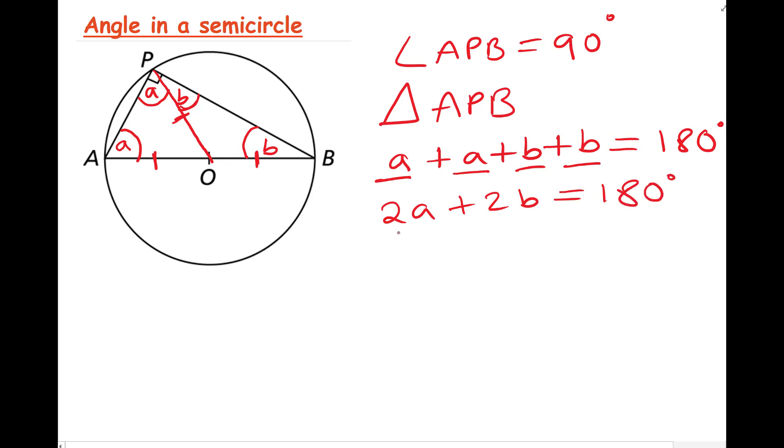Now what we can do is divide both sides by 2, or we can factorize the left-hand side: 2(A + B) equals 180 degrees. Now we can divide both sides by 2. So 2 divided by 2 is just 1, so we're left with A + B on the left side, and 180 divided by 2 is 90.